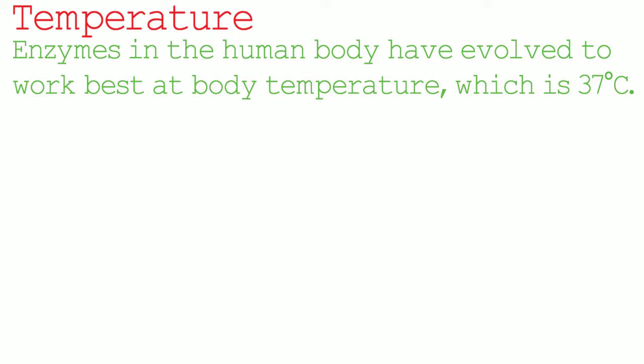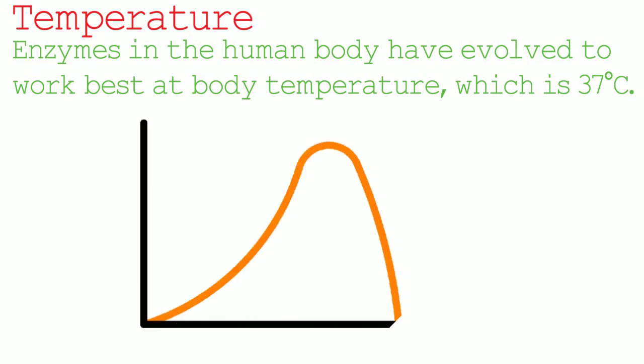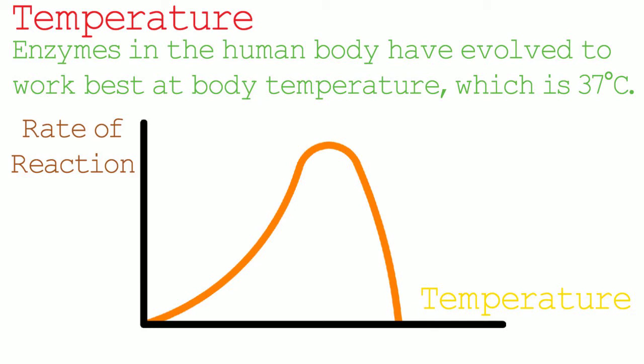For the exam you may be asked to plot a graph that shows the rate of reaction of enzymes when the temperature changes. On the x-axis we have temperature in degrees C, and on the y-axis we have rate of reaction. As we increase the temperature from 0 degrees, the rate of reaction increases. This is because the molecules in the enzymes and the substrate have more energy, and as they both have more energy the likelihood of them colliding increases and so does the rate of reaction.